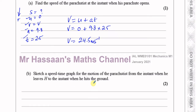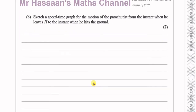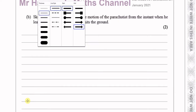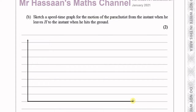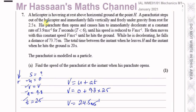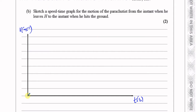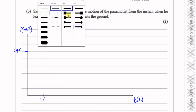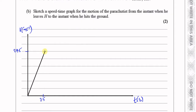Part B: Sketch a speed-time graph for the motion of the parachutist from the instant when he leaves the helicopter to when he hits the ground. We have our y-axis which is the speed in meters per second, and our x-axis which is the time in seconds. He starts off from rest at time equals 0, and his speed reaches 24.5 meters per second in 2.5 seconds. This is a straight line with constant acceleration due to gravity of 9.8.